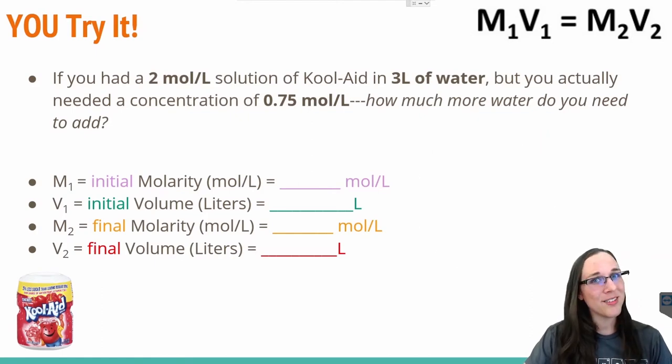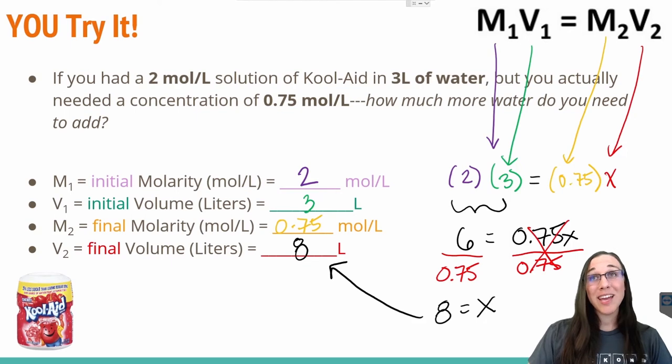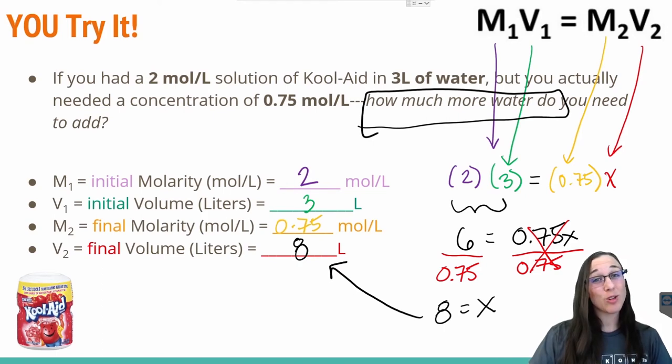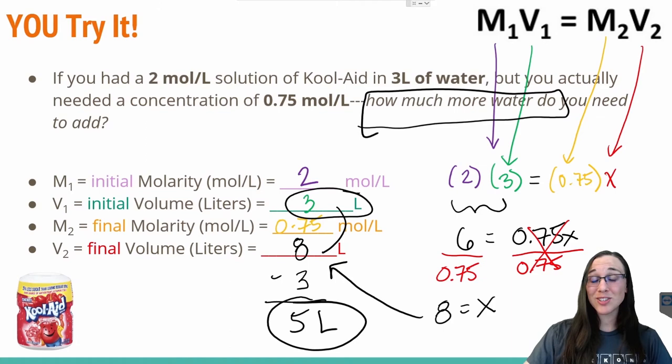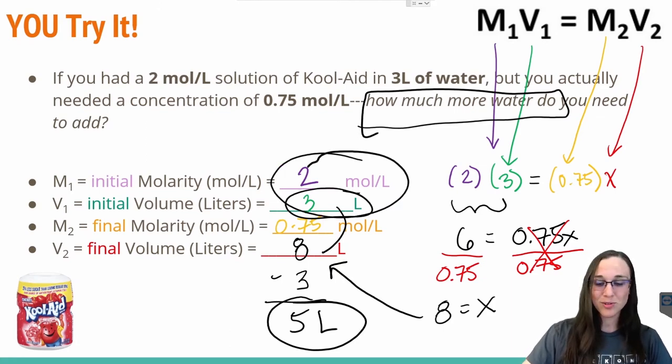All right, here we go. Let's see if you got your answer correct. Now again, keep in mind, this question is asking you how much more water do you need to add? This 8 liters is now your total volume, including what you started with, which was 3 liters. So if I need to know how much water to add, I need to subtract these two values. So 8 minus 3 will give us a value of 5 liters. I would need to add 5 liters to the 3 liters of 2 molar that I already have in order to create 0.75 molar Kool-Aid.